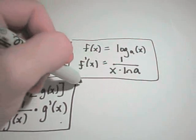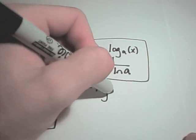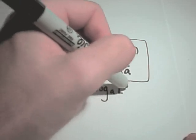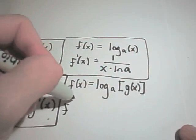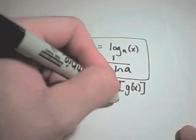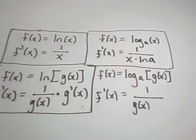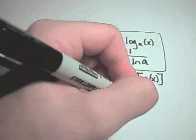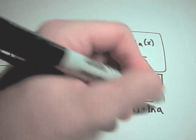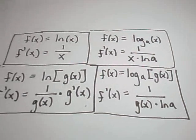And again, one more. Suppose you have a generic logarithm, log base a of g(x). The derivative of this one, you'll get 1 over g(x). Again, very analogous to the natural logarithm. But then you have to tack on this natural logarithm of the base, just like in the above example.